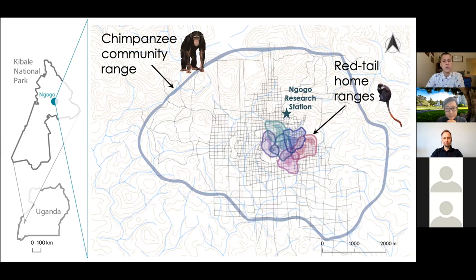We also measured important foods for red-tails in their home ranges and sampled urine non-invasively and analyzed it for C-peptide, which is a biomarker of energy balance.